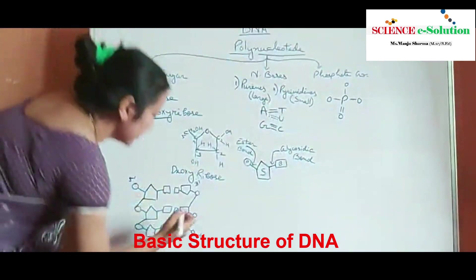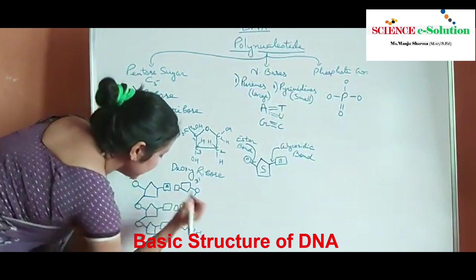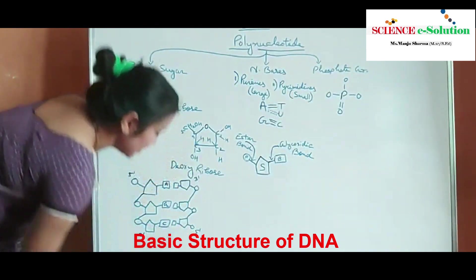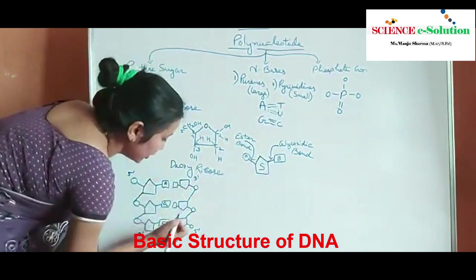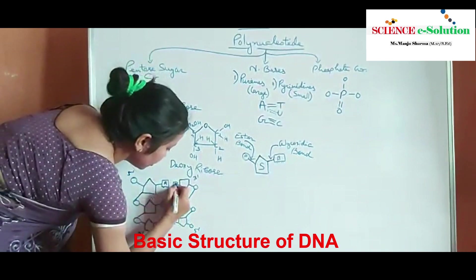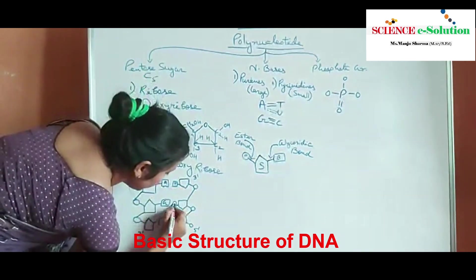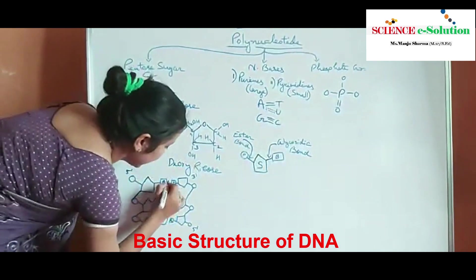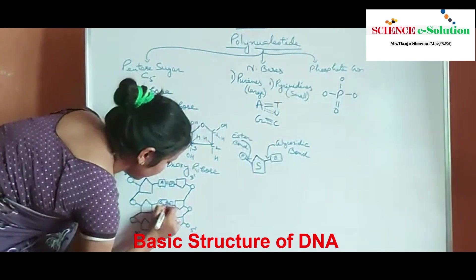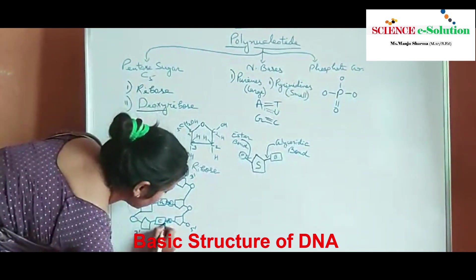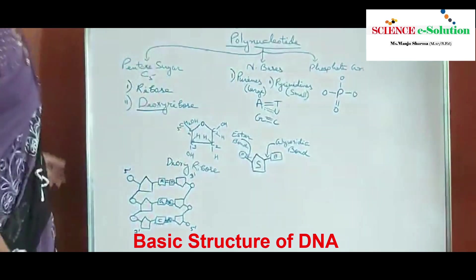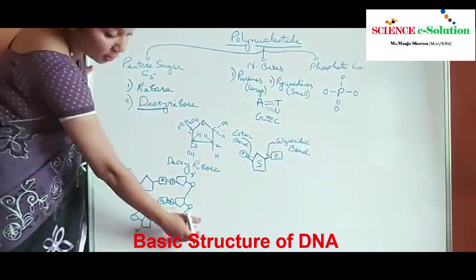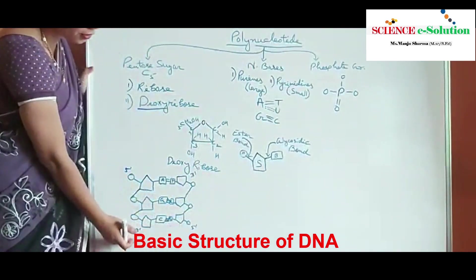Bases also follow complementary base pairing — for example, adenine is present here, guanine and cytosine. So according to complementary base pairing, thymine will be present opposite adenine, cytosine opposite guanine. Adenine-thymine share a double bond and guanine-cytosine share a triple bond.